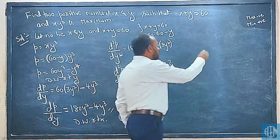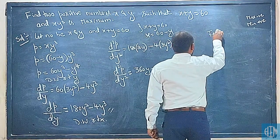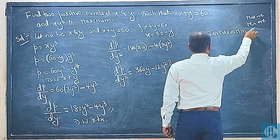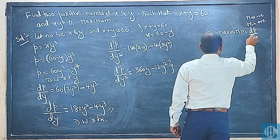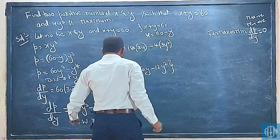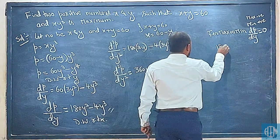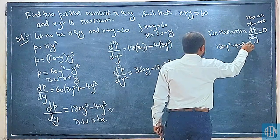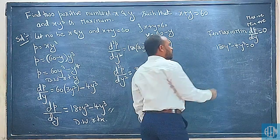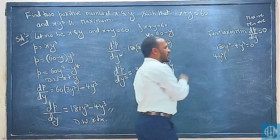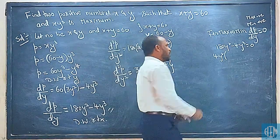Now for maximum or minimum, dP/dy is equal to 0. What is dP/dy? 180y² minus 4y³ equals 0. If you take 4y² common, what do you get? 45 minus y equals 0.